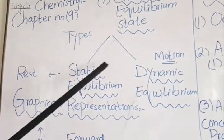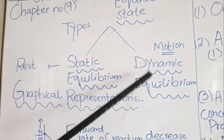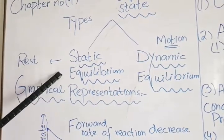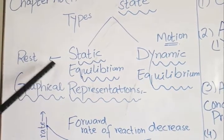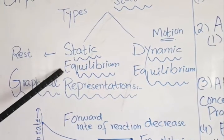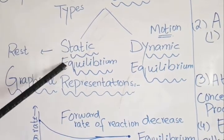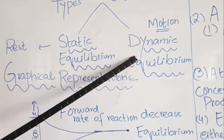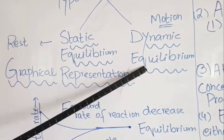There are two types of chemical equilibrium states. The first is static equilibrium and the second is dynamic equilibrium. Static means at rest position and dynamic means in motion. In static equilibrium, the reaction stops completely — it is at rest. In dynamic equilibrium, the reaction appears to stop, but continuous movement occurs at the molecular level. The rate of forward reaction equals the rate of reverse reaction.